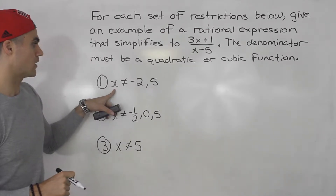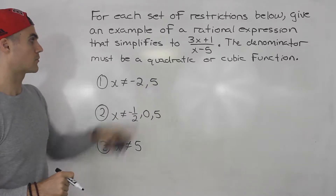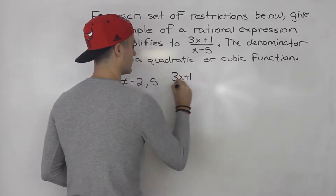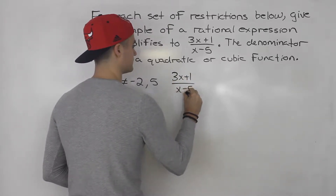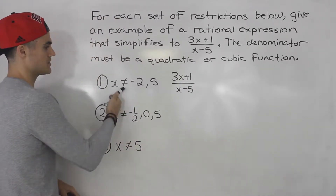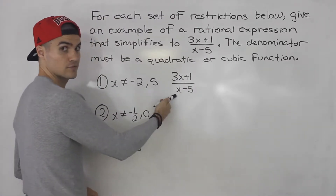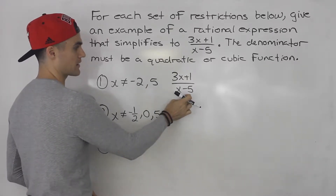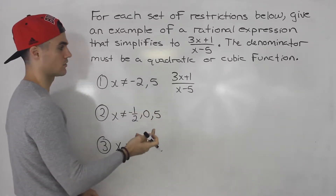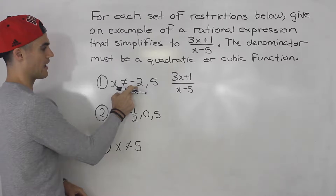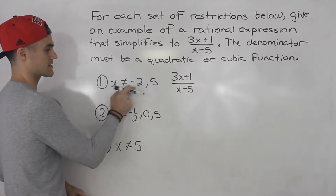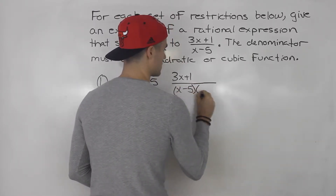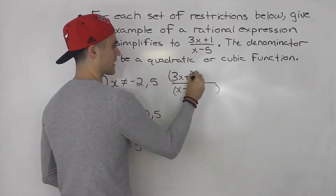Starting off with number one, we're told x cannot equal negative 2 or positive 5. Let's write out what the rational expression is going to simplify to. Notice that x cannot equal 5 — it's already taken care of in the simplified expression because x minus 5 cannot equal 0, which means x cannot equal 5. But we also have the restriction x cannot equal negative 2, so we know there was some kind of bracket that canceled out.